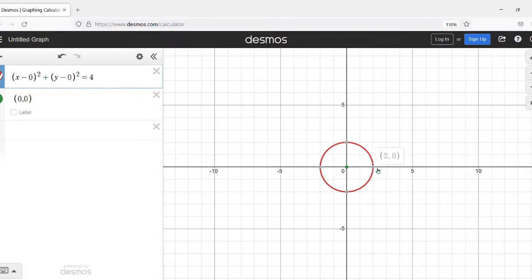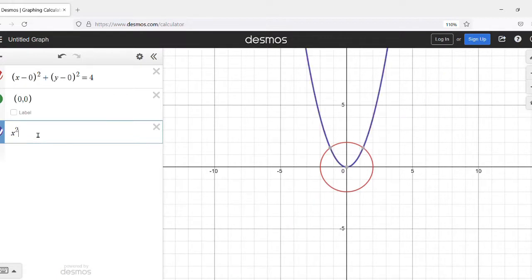It's centered at the origin. We put in 0 and 0 for h and k, those x and y coordinates. And we've also put in 4 for the r squared. And sure enough, there's our radius of 2 all the way around. Now, you may notice there would be another way to write this because x minus 0 is just x and y minus 0 is just y.